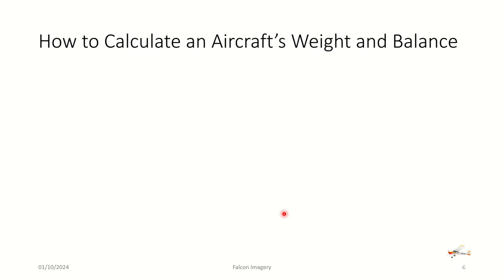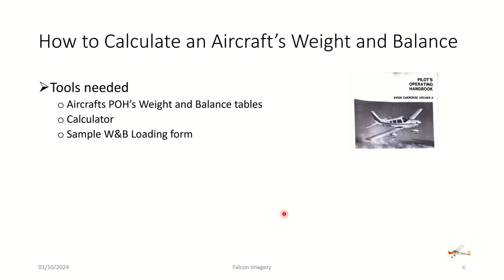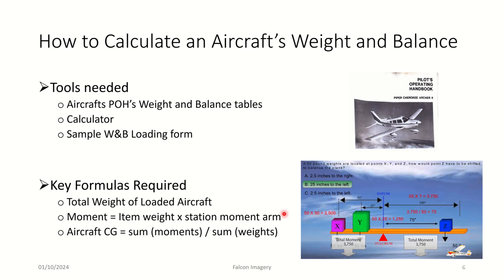So how do we go about calculating an aircraft's weight and balance? Well, we need a few tools. We need the aircraft's pilot operating handbook with the weight and balance tables. Both of those items are required to be in the plane. They're part of the AROW. If you remember right, AROW stands for airworthiness certificate, R for registration, O for operating handbook, the pilot operating handbook, and the W for the weight and balance information. So that should be in the plane. You need a calculator and a sample weight and loading form.